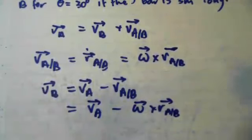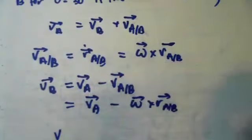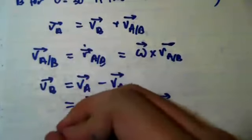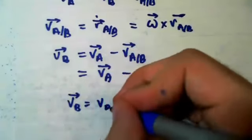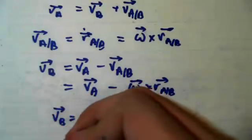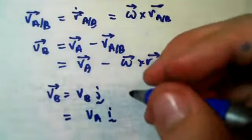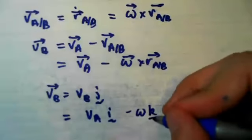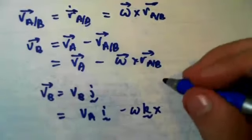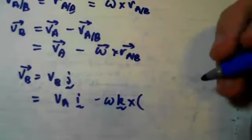Now if we look at V of B in the J direction, which it's going to be because it's constrained by the wall, we can see that V of B is equal to the magnitude of V of B in the J direction. So that, in turn, is equal to the velocity of A in the I direction minus our angular velocity in the K direction cross our components of length L. So that's L cosine theta.